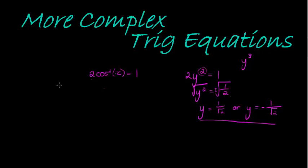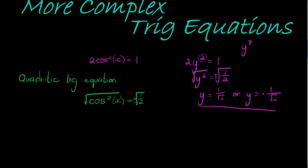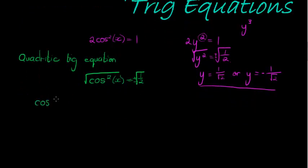This expression is similar in that 2cos²x = 1 is a quadratic trig equation. It can be written as cos²x = 1/2. We take the square root on both sides — cos²x just means cos(x) squared — and with the plus-minus we get either cos(x) = 1/√2 or cos(x) = -1/√2.